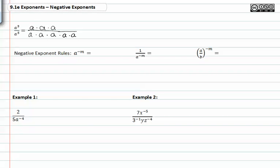When we reduce out the common factors, we end up with just one in the numerator. Because a divided by a would be one, and a divided by a again would be one, and likewise with a divided by a the third time. So we have one times one times one, which is just one over a to the second.